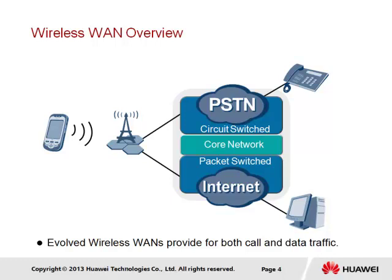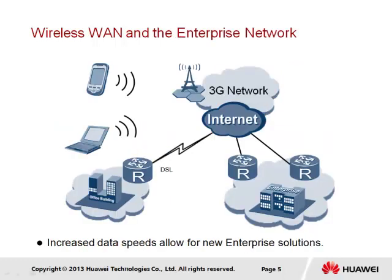The question we may be asking is what relevance this has to the enterprise network. As a result of the continued growth of mobile networks and data services, we are able to support an extended reach of network services to remote employees and allow for true mobility of the enterprise network beyond the physical boundaries of the office. One limitation has been transmission speeds, however with the continued push for more data capacity, the mobile network is enabling new opportunities for enterprise solutions.